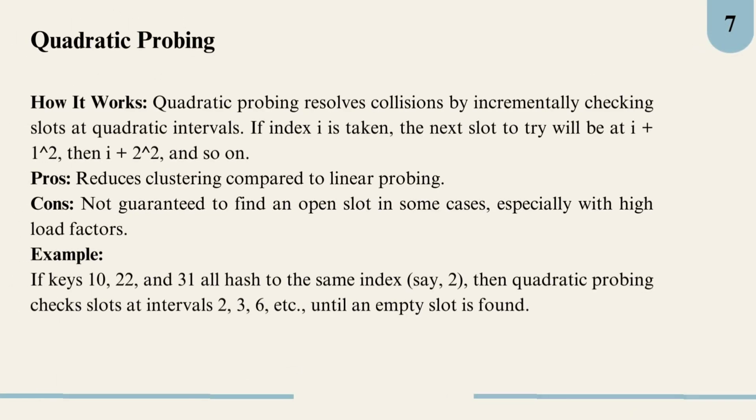Quadratic probing offers a way to avoid the clustering issue we see in linear probing. Instead of moving just one slot forward, it checks positions based on a quadratic formula. For example, after a collision, it checks the slot 1², then 2², then 3² positions away. This increases the spread and helps avoid large clusters forming around a single index. However, quadratic probing can sometimes struggle to find an open slot if the table is too full, and it may require extra handling to ensure we don't get stuck in cycles. It's effective at moderate table loads because it reduces clustering.